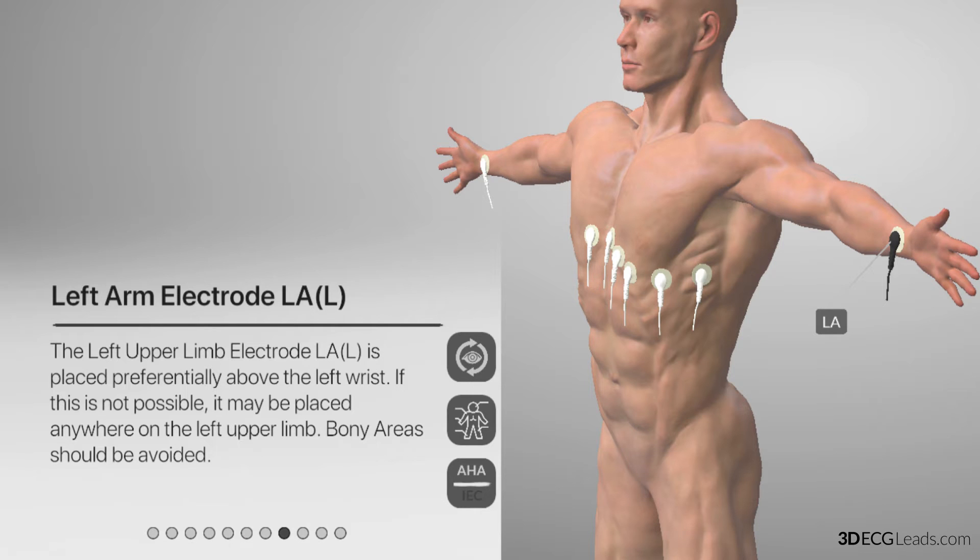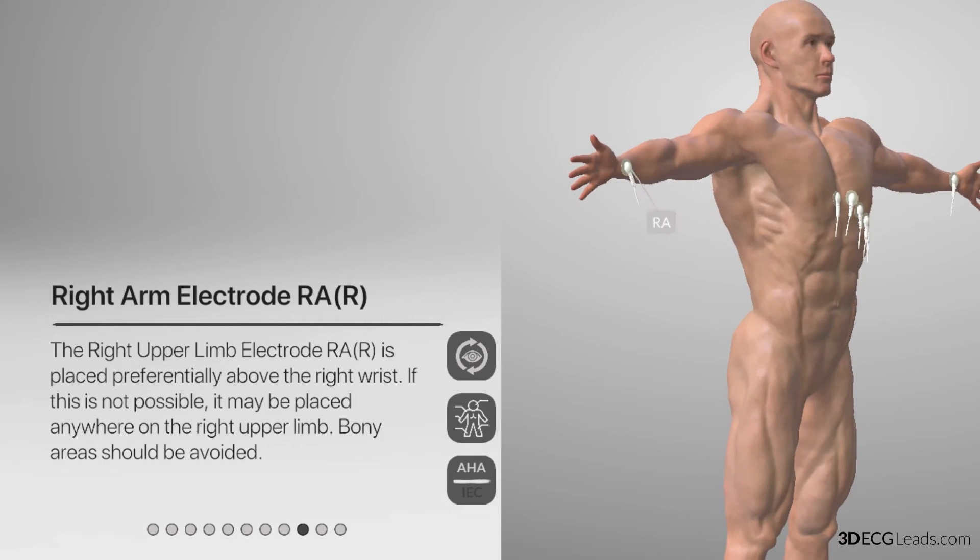Moving over to the right arm lead, it is named RA, and is white in color, and should be placed slightly above the right wrist.